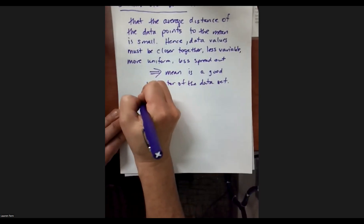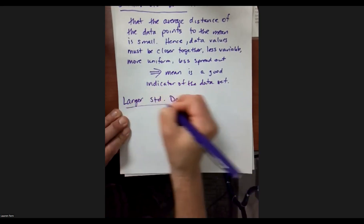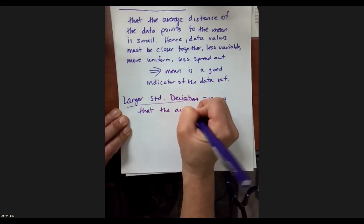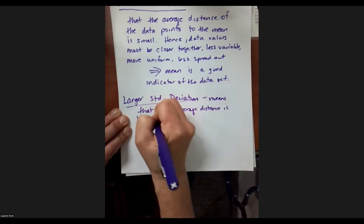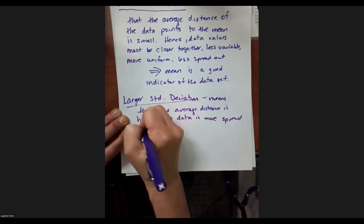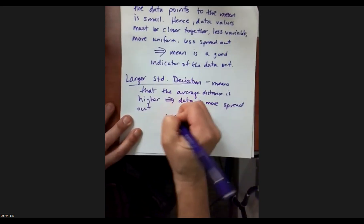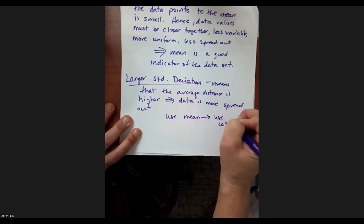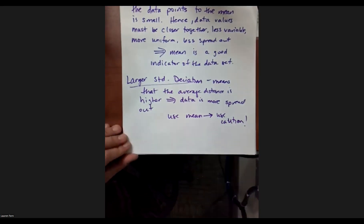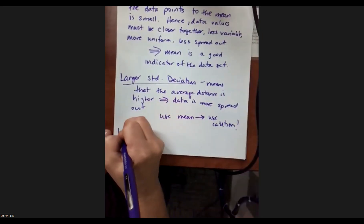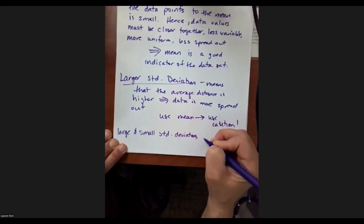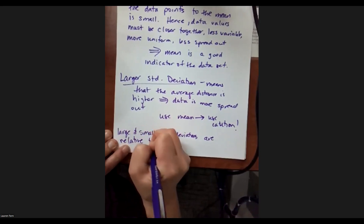Contrast that with a larger standard deviation: the average distance is higher, which then implies that the data is more spread out and less consistent. So if you're going to use the mean, use caution. The moral of the story is that large and small standard deviations are relative to the context of the data, and they're most meaningful when you can compare.